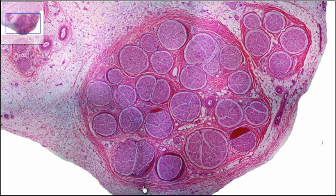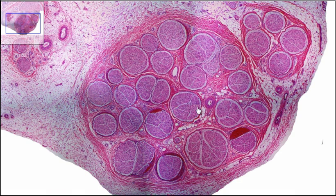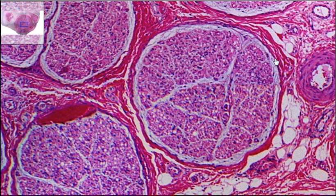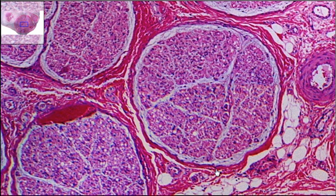What it's actually holding together are these bundles, which are referred to as fascicles. Each individual bundle is a fascicle. The fascicle is also going to have a connective tissue wrapped around it — you can see this nice connective tissue wrapped around it. This is called your perineurium. The perineurium wraps around the fascicle, holding all the contents within.